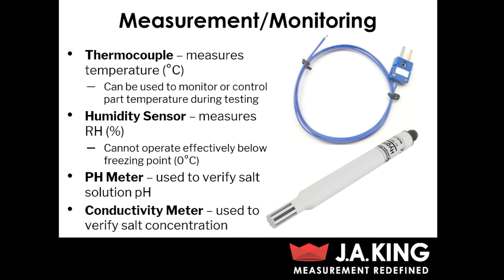Now I want to touch on the measuring and monitoring equipment used in these tests. The two most common types of sensors are thermocouples and humidity sensors, because those are your main parameters of environmental testing — temperature and humidity. Thermocouples are going to be used to control your actual test equipment, but they can also be placed on the actual surface or the interior of the part during testing so that you can monitor your actual part temperature during testing, as this might be different from the ambient air temperature.